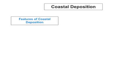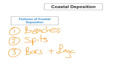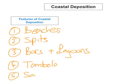Some of the features of coastal deposition are: one, beaches; two, spits; three, bars and lagoons; four, a tombolo; and five, sand dunes.